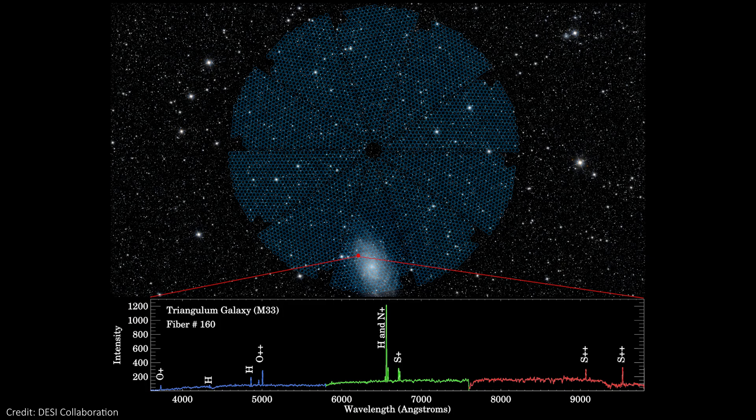DESI is a common one to think about. It's the dark energy spectroscopic instrument, and it's a really similar instrument but in the northern hemisphere, and it has a field of view of 3.2 square degrees, so it's just a little bit smaller than Foremost. However, DESI does have around 5,000 fibers, meaning it can actually measure more objects simultaneously, even with its smaller field of view.